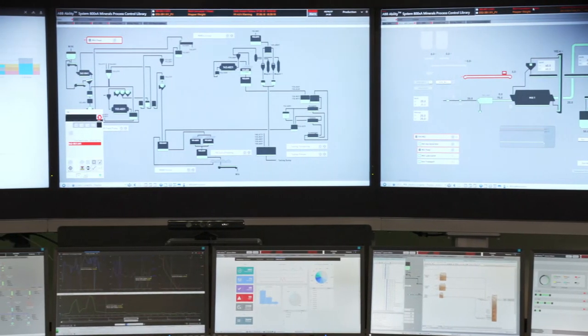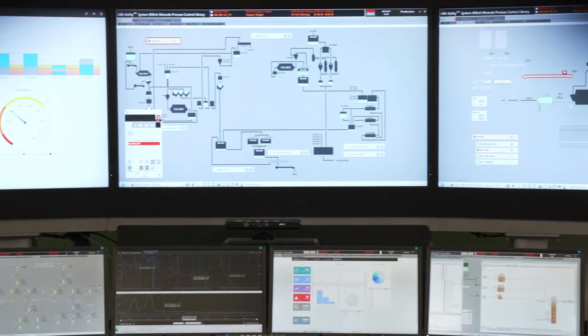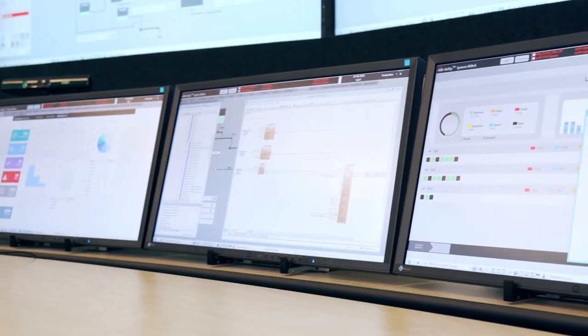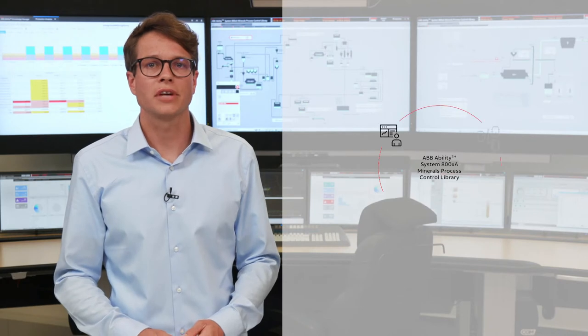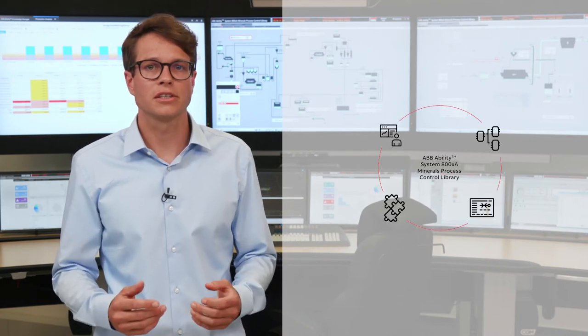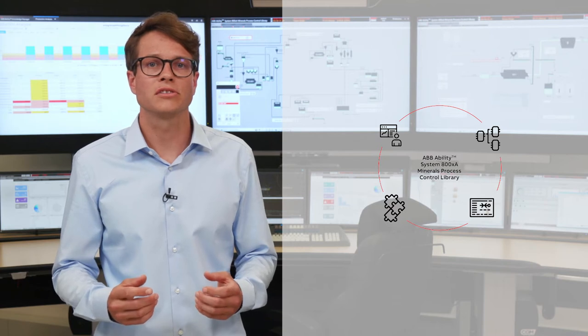ABB System 800XA Extended Automation Platform controls more than 10,000 industrial plants worldwide. The Process Control Library captures several decades of know-how in the mining and cement industries and encapsulates it into a ready-to-use solution. The Library contributes as a value-adding extension to System 800XA in order to offer a complete automation system